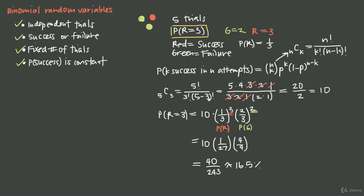Keep in mind I can use this same formula for any number of successes. I could calculate the probability of getting the red marble exactly once, twice, three times, four times, five times, or zero times. Or I could redefine green as the success and red as the failure and run the same calculations. This is the method for finding the probability of an exact number of successes in a specific number of trials.